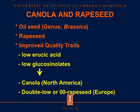Canola and rapeseed are oilseeds in genus Brassica. Rapeseed has been developed by plant breeders to obtain low erucic acid in oil and low glucosinolates in meal. They then changed the name from rapeseed to canola, especially in North America, and they may call it 00 or 00 rapeseed in Europe.